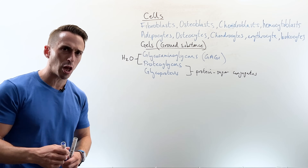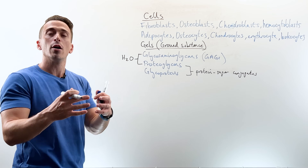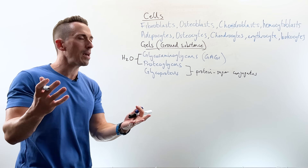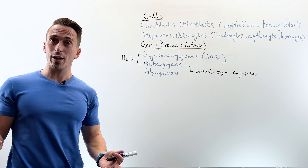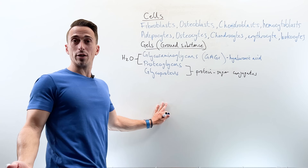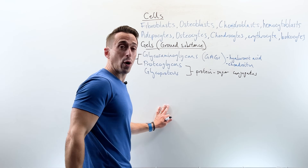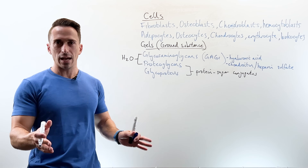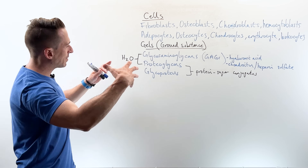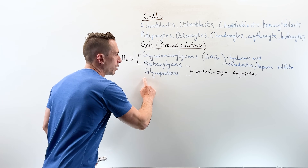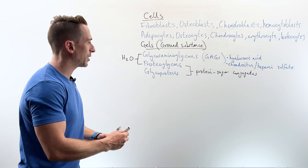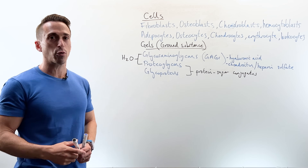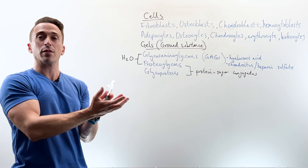The GAGs bind to proteoglycans and hold onto water. Glycoproteins are really important as signaling molecules — surface signaling molecules and cell signaling molecules — and they play a role in enzymatic reactions. So these are the gels that are part of connective tissue.